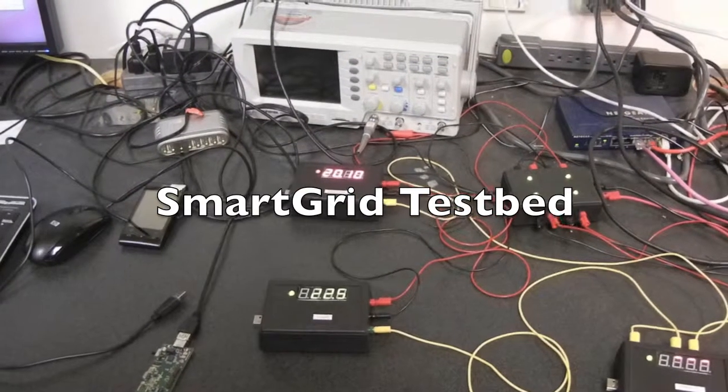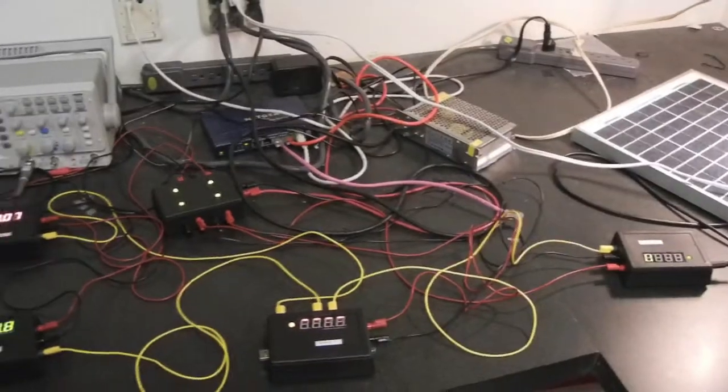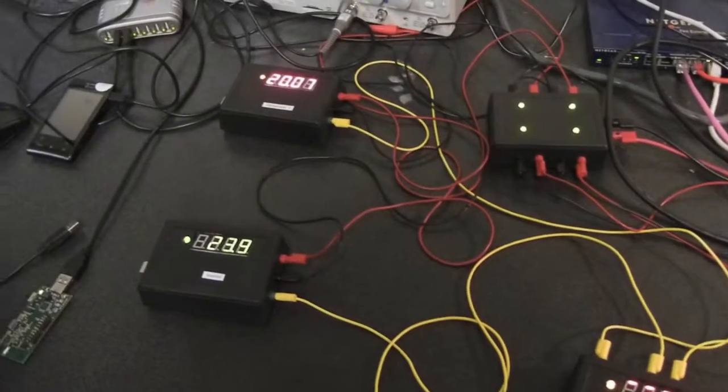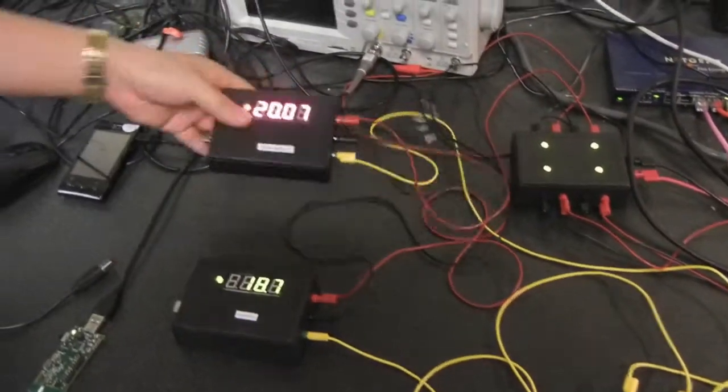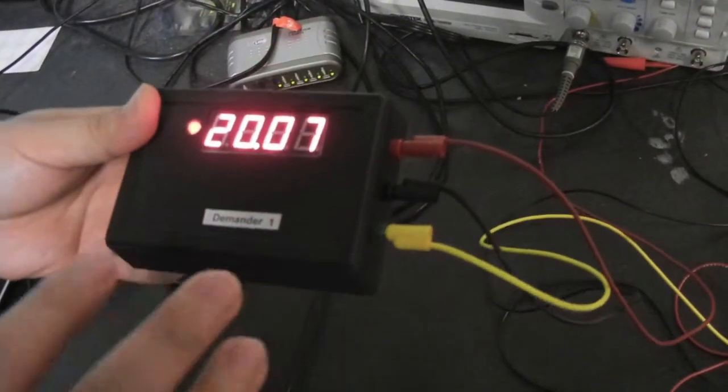Now, this is the testbed we have built for Smart Grid. All the black boxes are energy modules that can be used to emulate one entity inside Smart Grid. They are equipped with radio to communicate and wired together to emulate the real-time current flow.